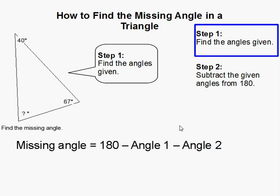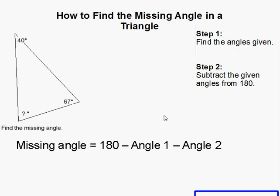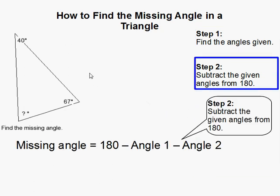So let's keep that in mind. And then we have to find our missing angle, which is over here. Now the next step is to subtract the given angles from 180 degrees. We're subtracting from 180 because all of the internal angles in a triangle always add up to 180 degrees, no matter what kind of triangle it is.